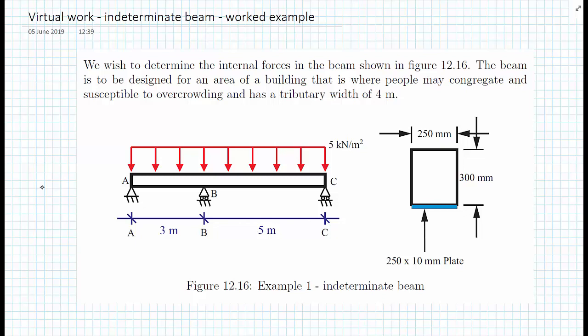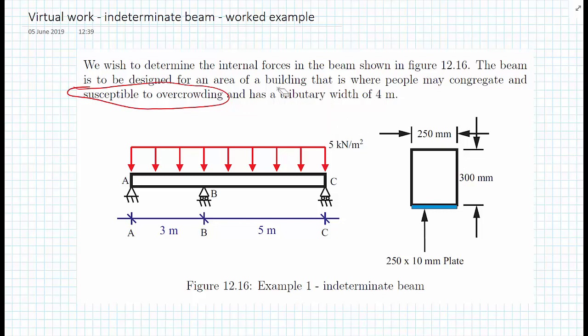We're told that the beam will be designed for an area of the building where people may congregate and is susceptible to overcrowding. Looking through the design standards, we find that we have to design for a live load of five kilonewtons per meter squared. We're also told we have a tributary width of four meters, i.e. we have a beam every four meters.